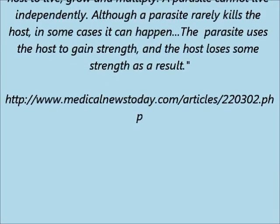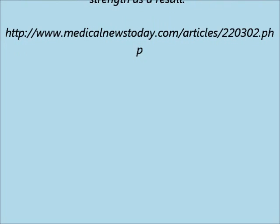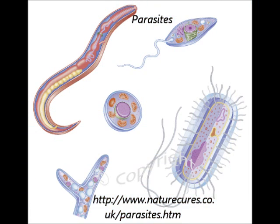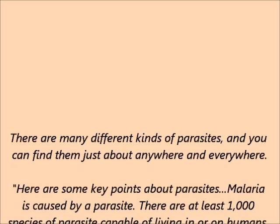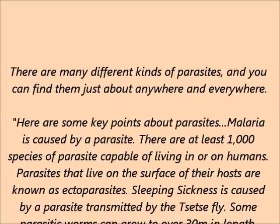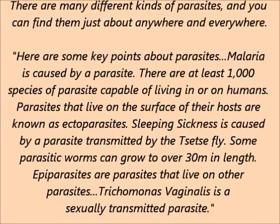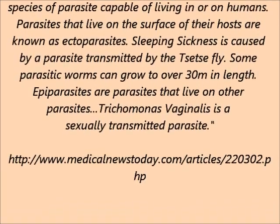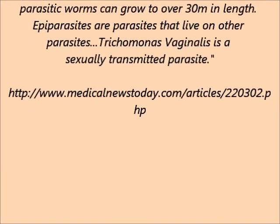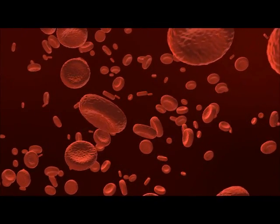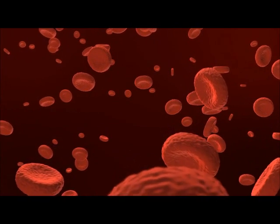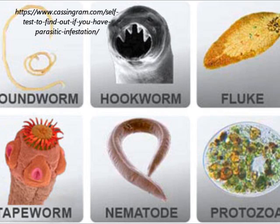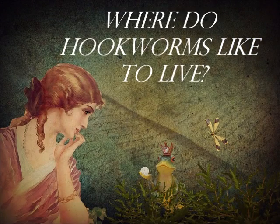Here are some key points about parasites: diseases such as malaria are caused by parasites. There are at least 1,000 species of parasite capable of living in or on human beings. Parasites that live on the surface of their host are called ectoparasites. Sleeping sickness is caused by a parasite transmitted by the tsetse fly. Some parasitic worms can grow to over 30 meters in length. Epiparasites are parasites that live on other parasites. Trichomonas vaginalis is an example of a sexually transmitted parasite.